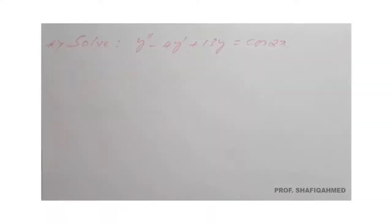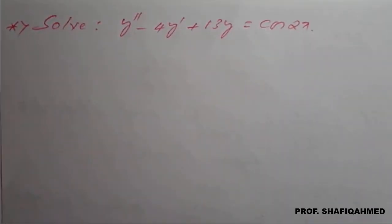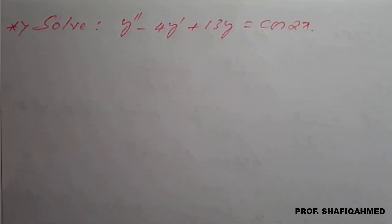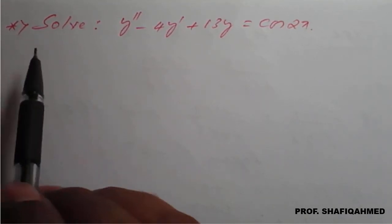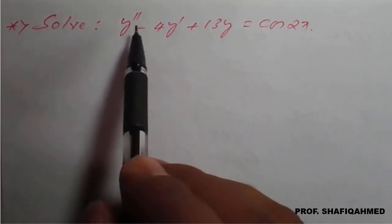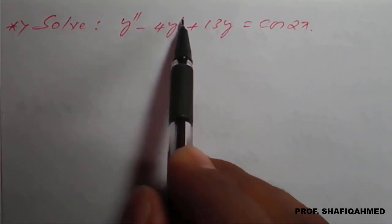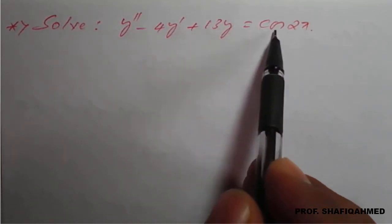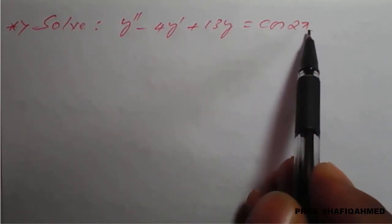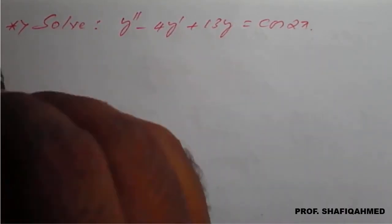Hello everyone. In this lecture we will see a problem based on type 2 of non-homogeneous differential equations. The problem is: solve y double dash minus 4y dash plus 13y equal to cos of 2x.